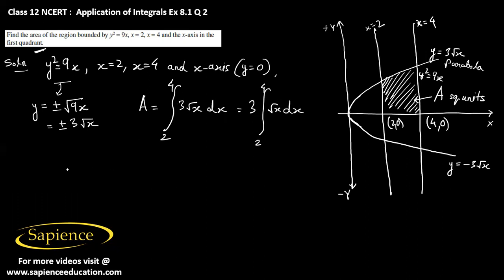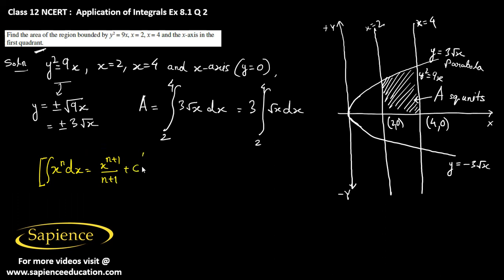The important formula we will use here is: the integral of x to the power n dx equals x to the power n plus 1, divided by n plus 1, plus C. For a definite integral, we don't need the arbitrary constant.